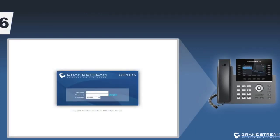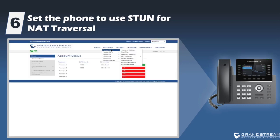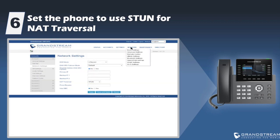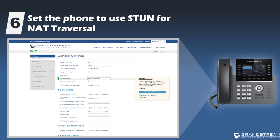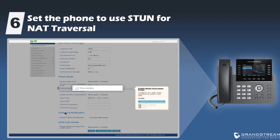If SIP ALG is disabled and you still experience one-way audio, you can manually set the phone to use STUN mode for NAT traversal. STUN mode enables an IP phone behind NAT to learn about its public IP address and use it for audio communication. There are two steps: first, select the active account, go to Network Settings, and change NAT traversal to STUN. Next, go to Settings > General Settings > STUN Server and enter the IP address or domain name of a valid STUN server. If you do not know one, you can use the Grandstream server stun.ipvideotalk.com.